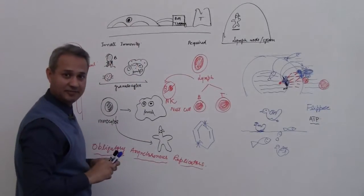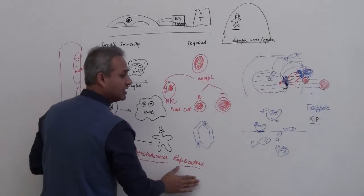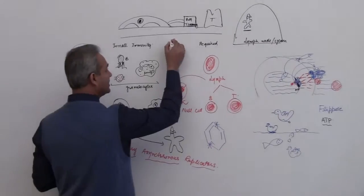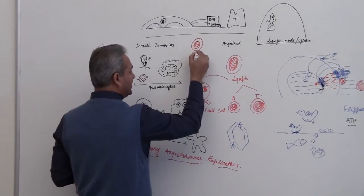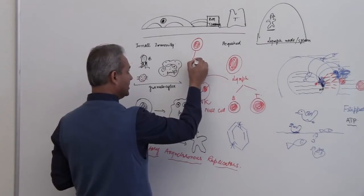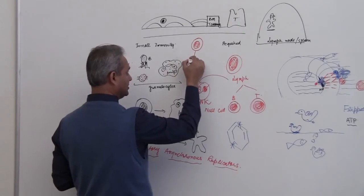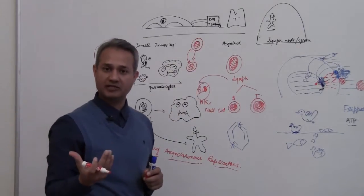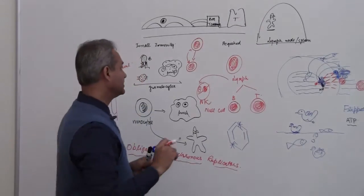The stem cells sitting in there are obligatory asynchronous replicators. What that means is that if we have a stem cell, when it divides by mitosis it would create a daughter cell of its own type. So you would call this synchronous replication - similarity in the daughter and the parent, synchronous.